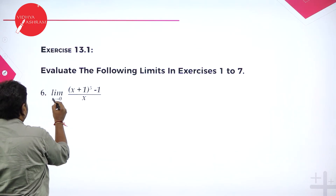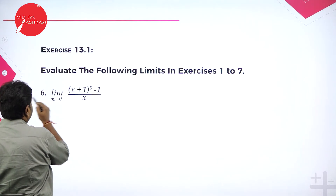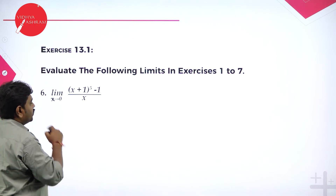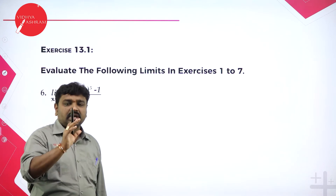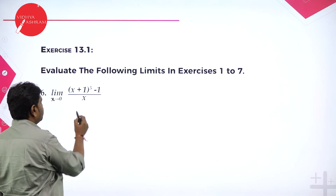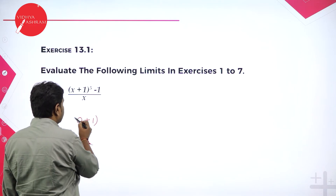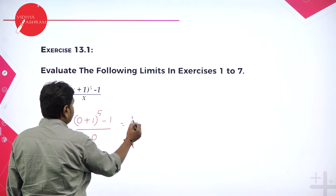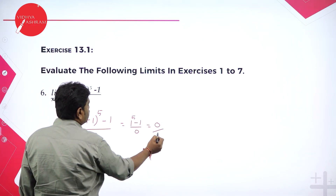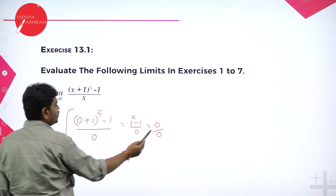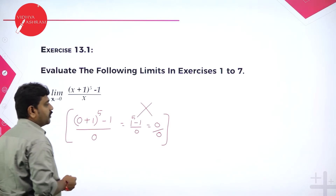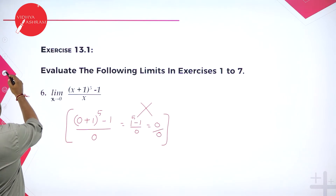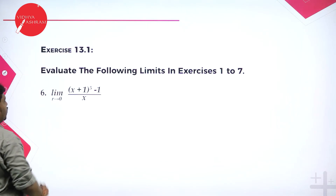Problem 6: limit x tends to 0, x plus 1 power 5 minus 1 divided by x. If you put x equals 0, you get 0 plus 1 power 5 minus 1 by 0, which becomes 1 minus 1 by 0, that is 0 by 0. So 0 by 0 is a mathematical indeterminate form. Therefore this is not possible — it is not in standard form, and in order to solve these kinds of problems we need to apply a theorem.